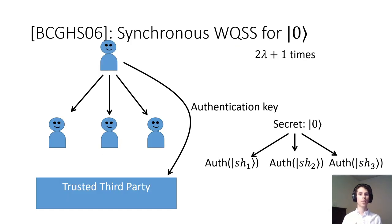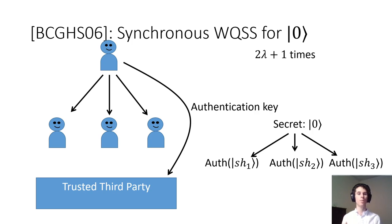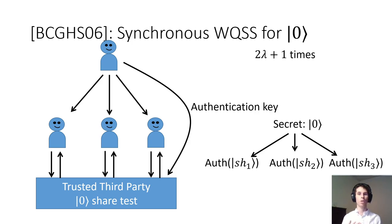In prior work, weak quantum secret sharing for zero states uses three steps. First, the dealer splits a zero state into several shares and authenticates them. Then they send the authenticated shares to each party and send the authentication key to a classical trusted third party. This trusted third party can be implemented using any secure computation protocol for classical functionalities. This is done a total of two lambda plus one times, where lambda is the security parameter. Finally, the parties perform some local computations and measure all but one of their shares.